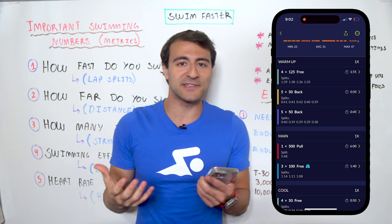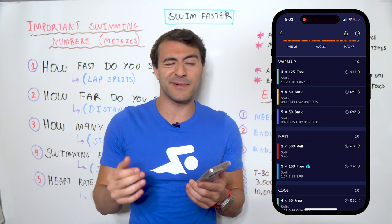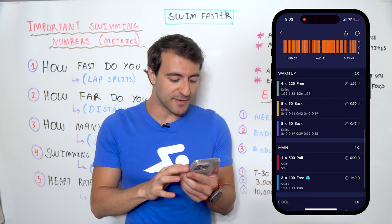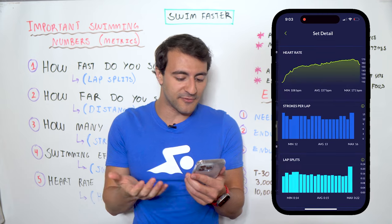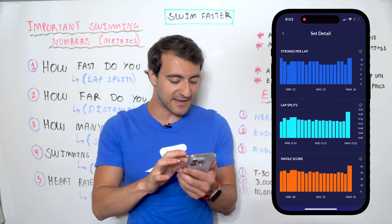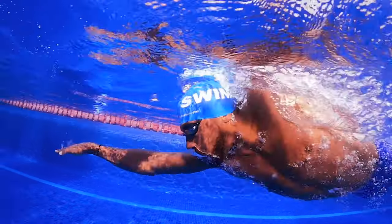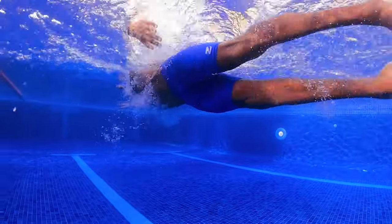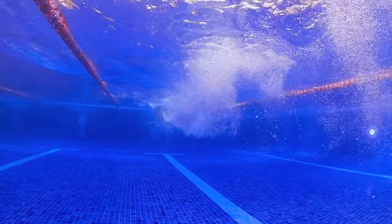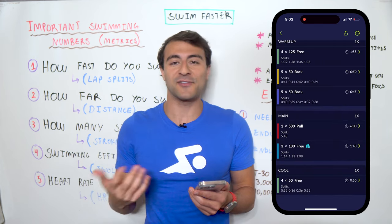The first concept is: how fast are you swimming on every set, every distance, every stroke? It can be overwhelming to track all of that in the moment, so I just think about it during the set and review the stats in the app afterward. For example, on this 500 freestyle main set I can see my heart rate, strokes per lap, lap splits, and SWOLF score.